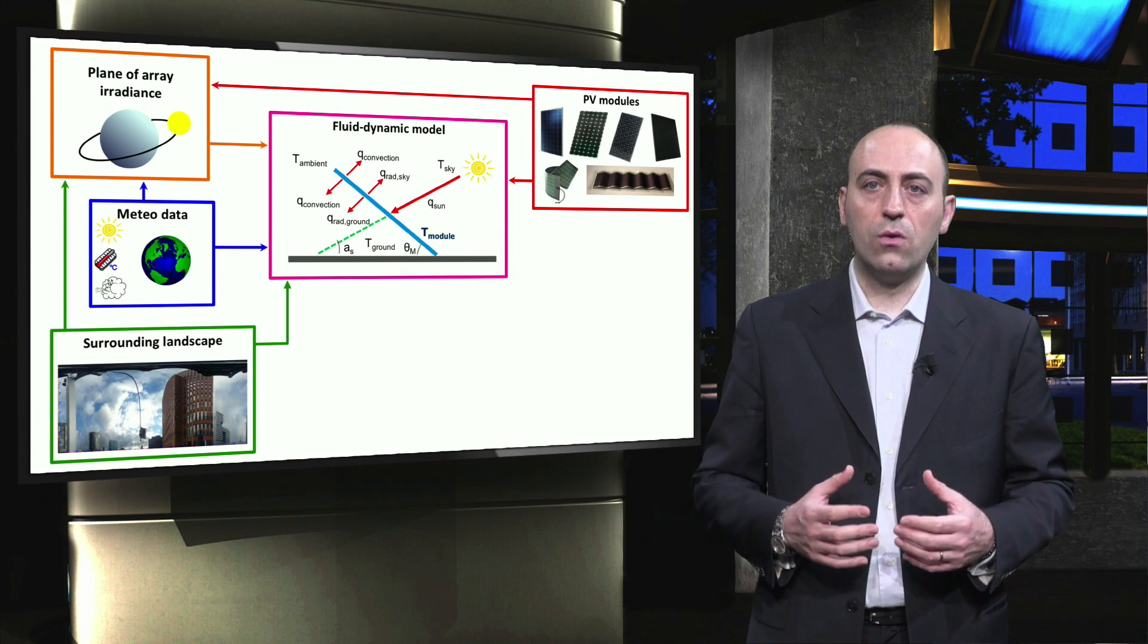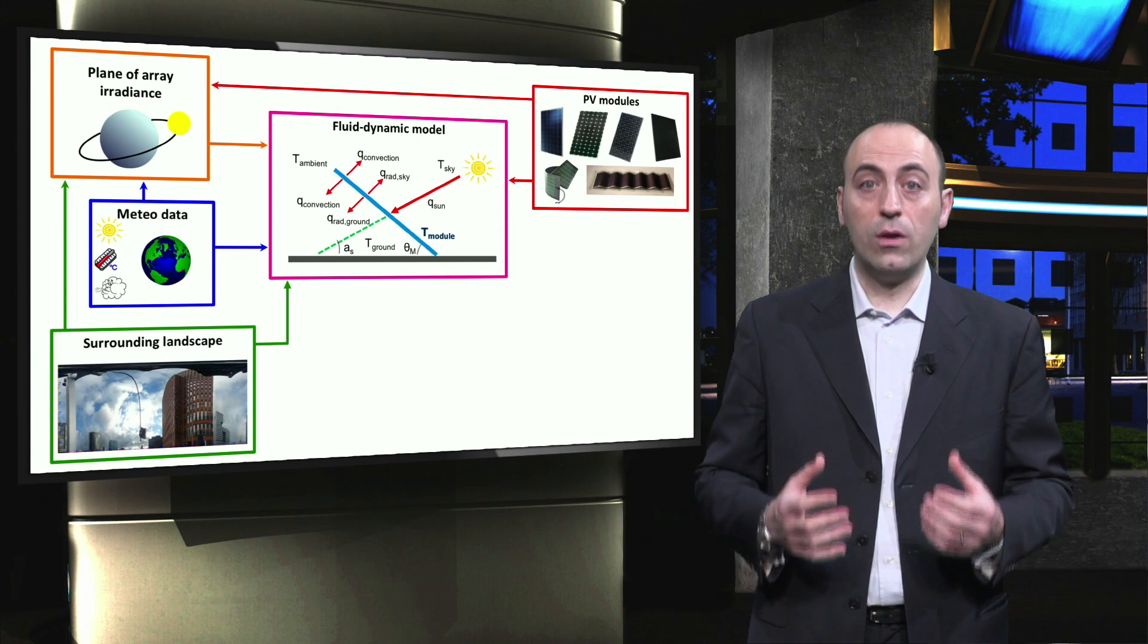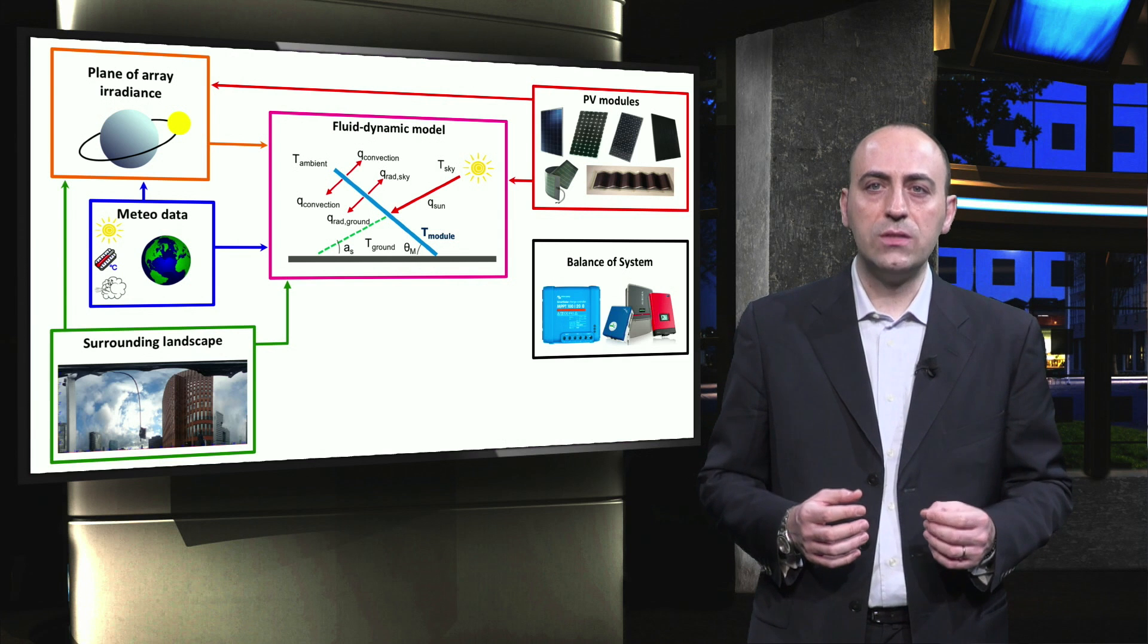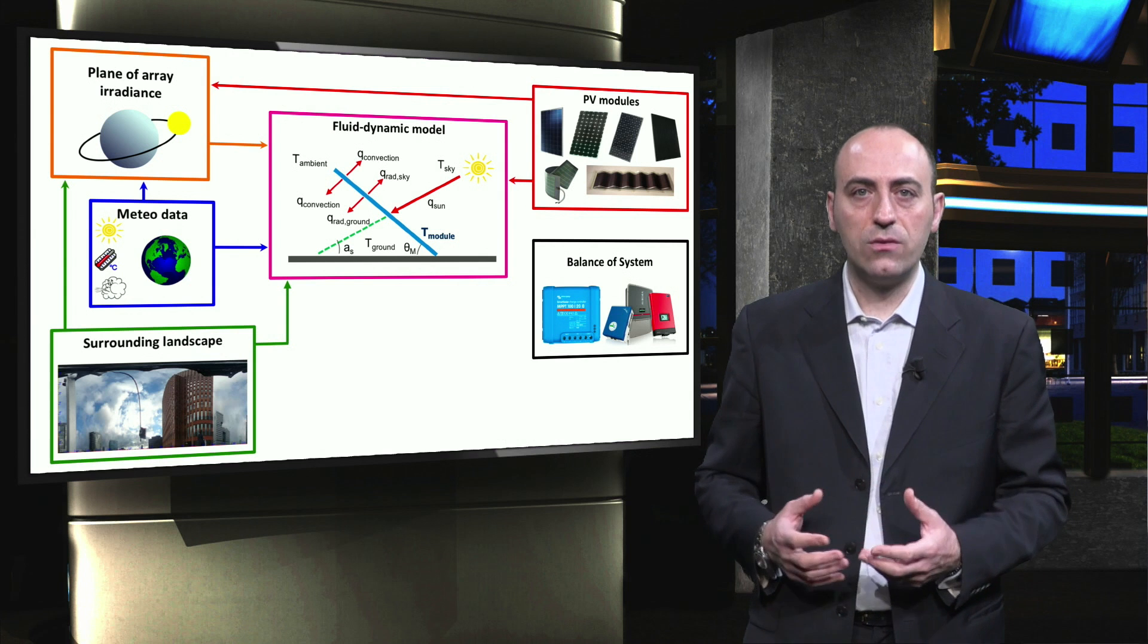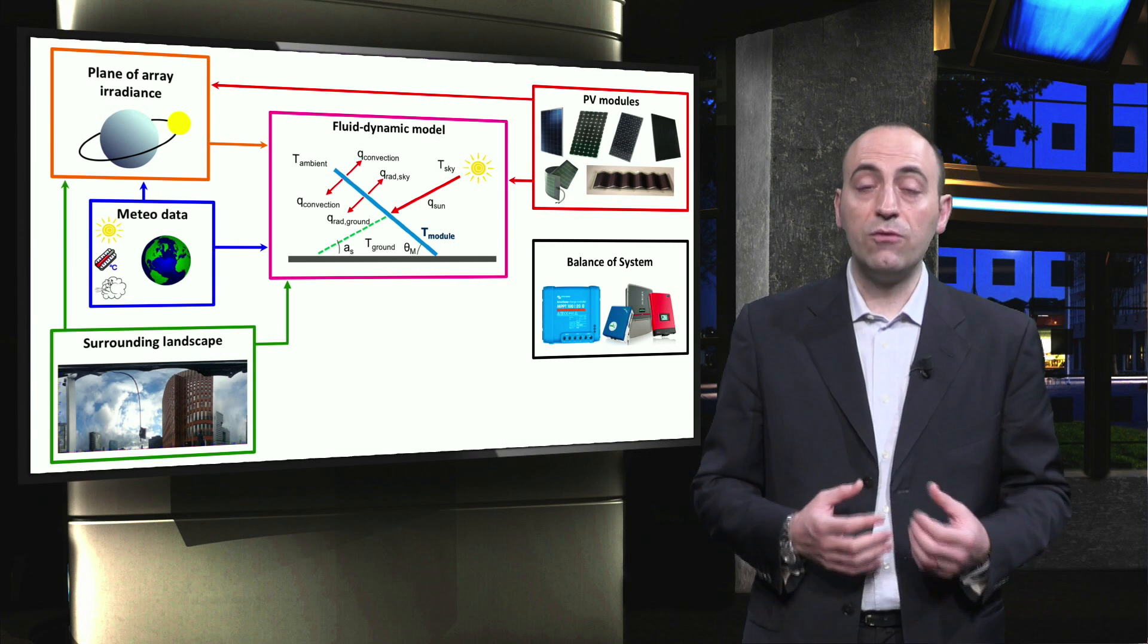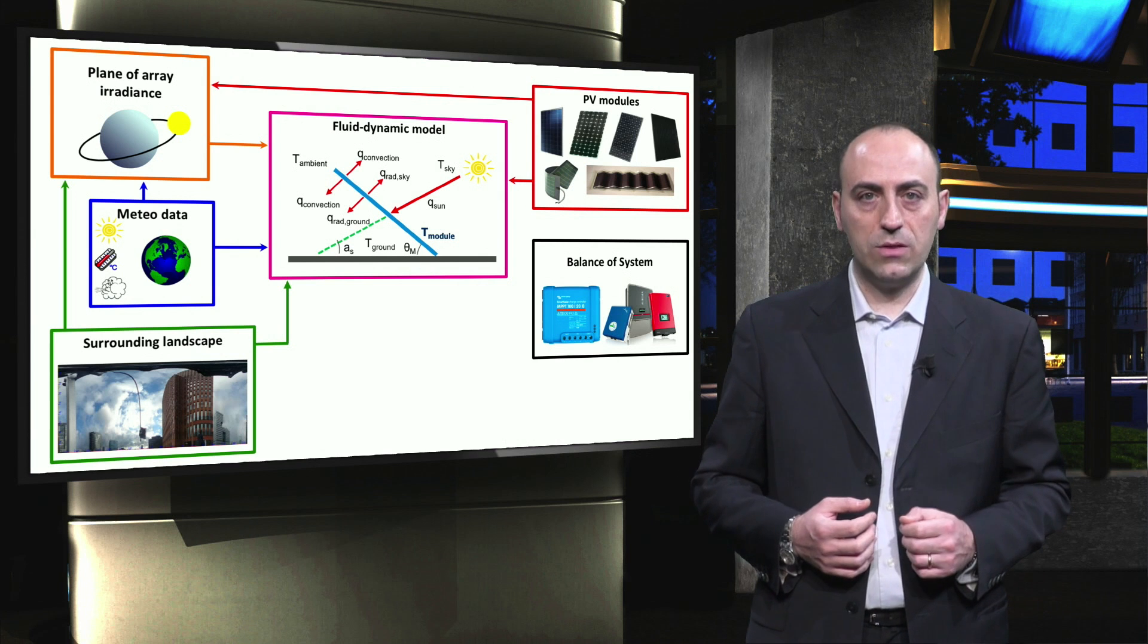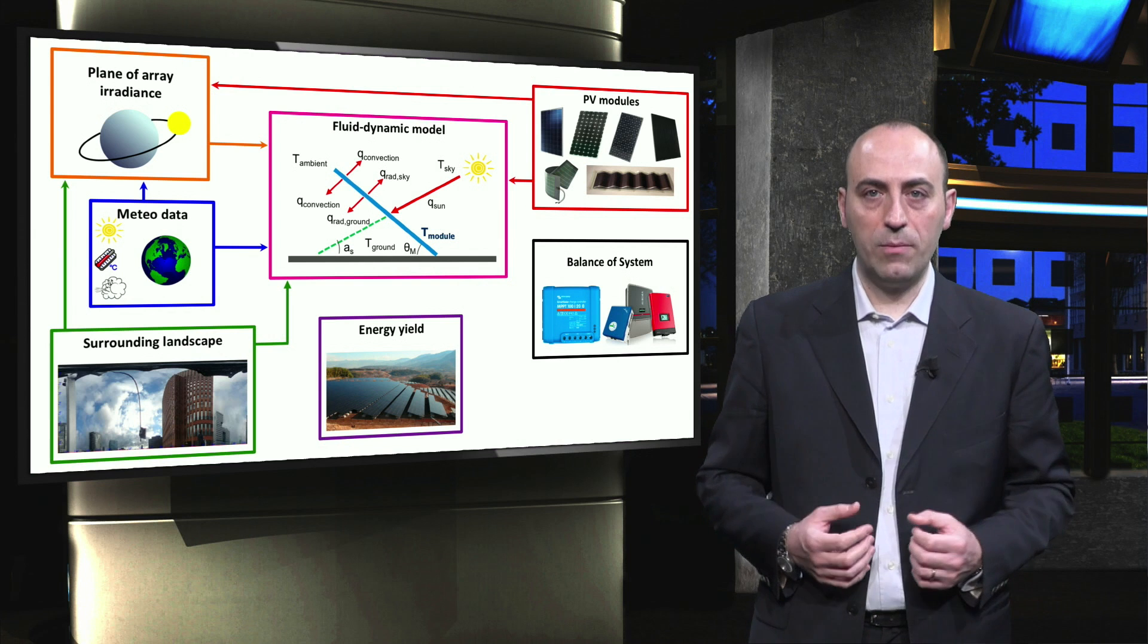However, as we saw in the previous video, the PV system consists of more than only modules. The balance of system components, such as charge controllers and inverters, introduce additional losses and limitations that have to be considered during the PV system design. Finally, we can accurately estimate the energy yield of a PV system.